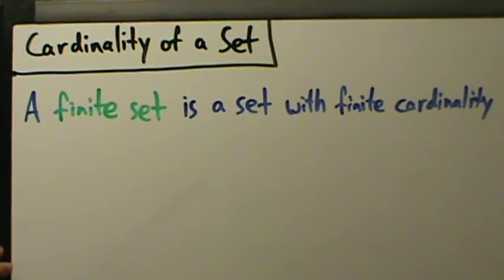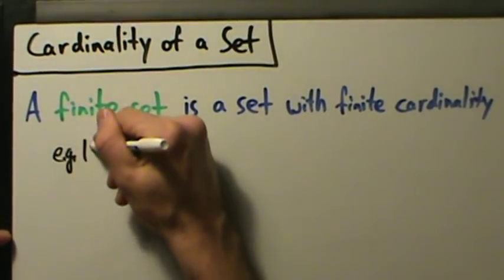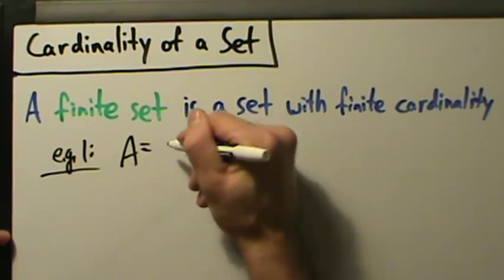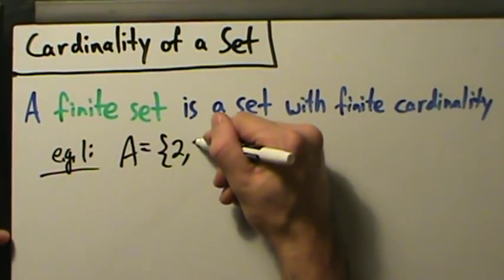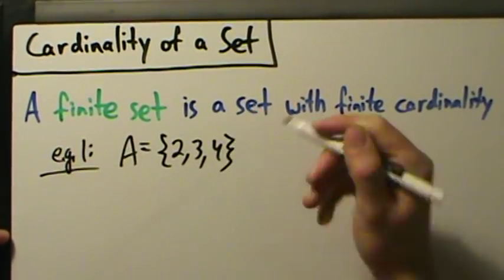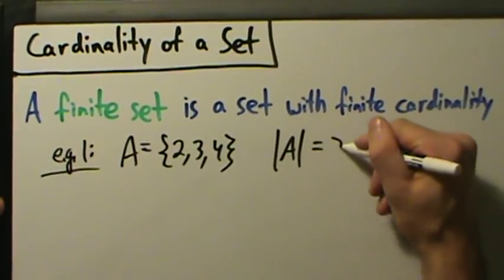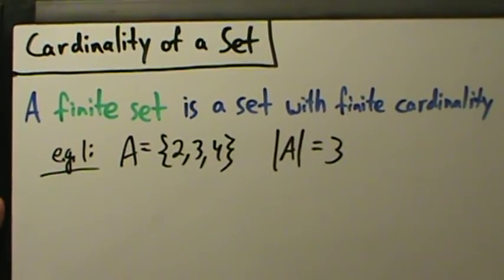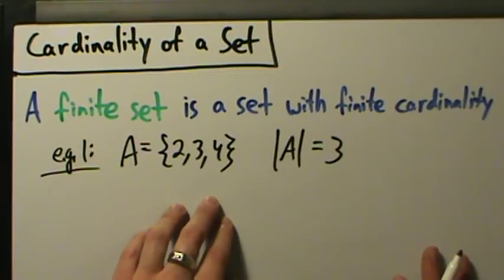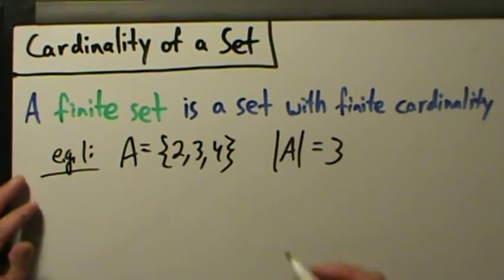Example one: let's say we have set A = {2, 3, 4}. The cardinality of A is 3 — there are three elements. That's a finite cardinality, so A is a finite set.